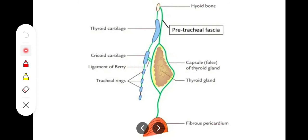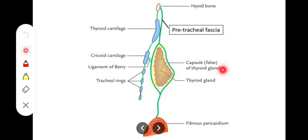Because the pre-tracheal fascia is in front of the trachea it is essentially a midline structure. The carotid sheath is also one of the layers of the deep cervical fascia, and it encloses the common carotid artery, the vagus nerve, and the internal jugular vein.